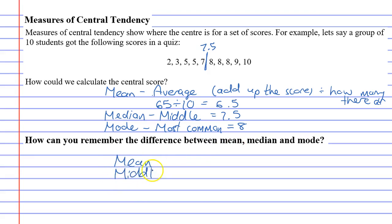Mean. I meant to write down median, not middle—I'm getting myself confused. So, mean, median, and mode. We know that median is the middle score, mode is the most common score, and mean is the average score.